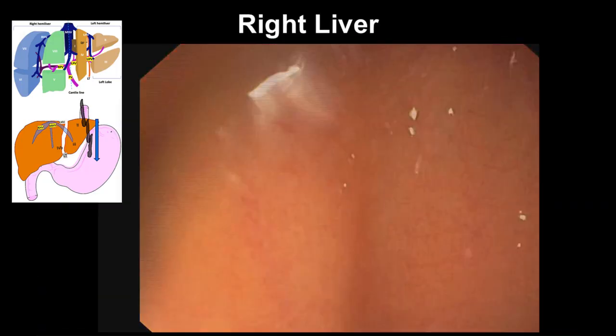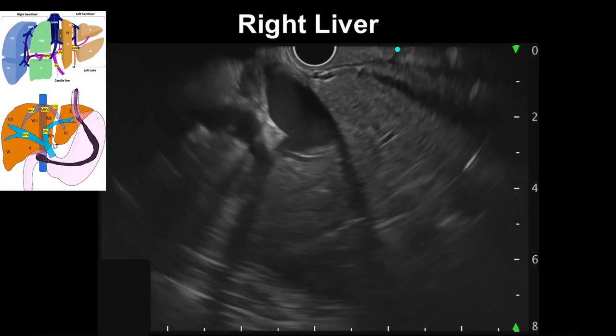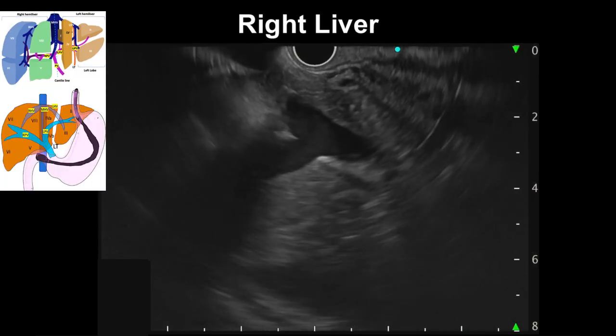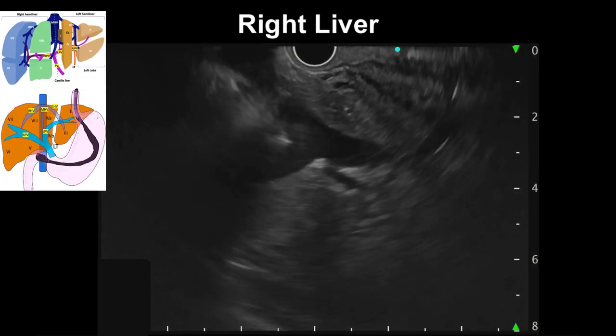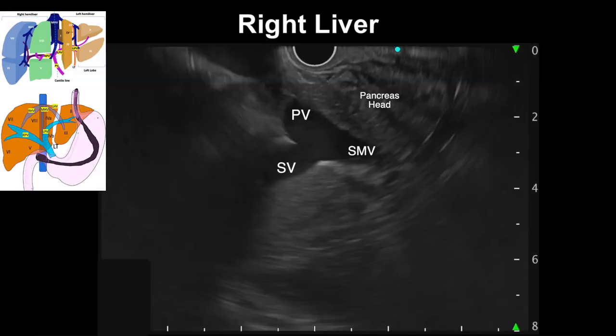To study the right liver, the scope is passed through the pylorus, advanced to the apex of the duodenal bulb, and pressed against the superior duodenal angle. From this position, the portal confluence can be seen with the pancreas head on the upper right side of the screen.